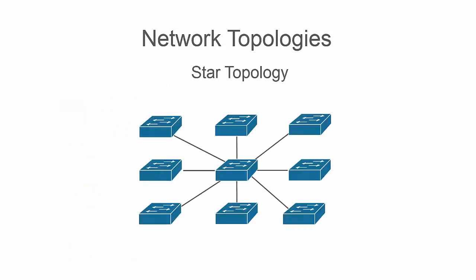A star topology is just like its name and makes a star formation, with a central device that provides all of the connectivity. The hub and spoke design is cheaper due to the small amount of connections, but is risky with a single point of failure on the central device.